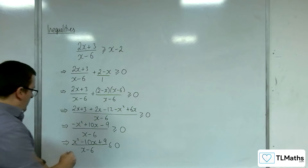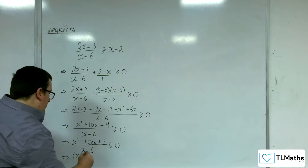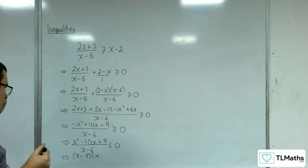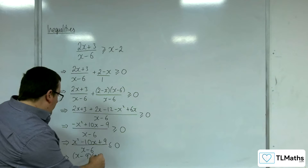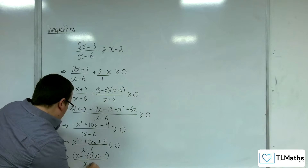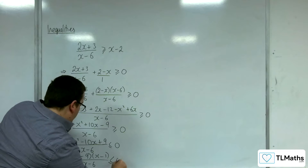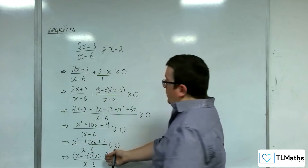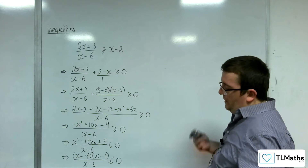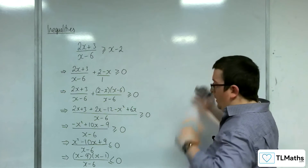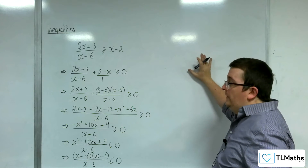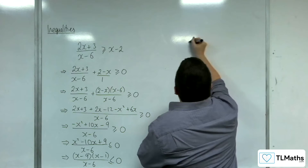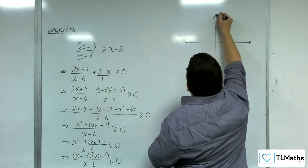The x² - 10x + 9 can be factorised as (x - 9)(x - 1). So we have (x - 9)(x - 1)/(x - 6) ≤ 0. That's actually easier for me to sketch now.